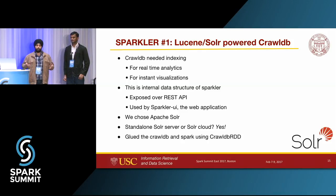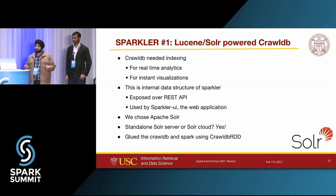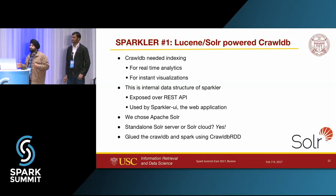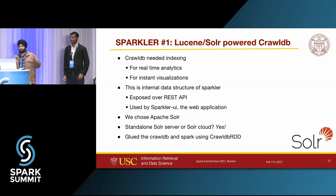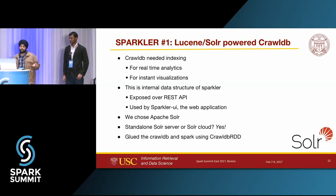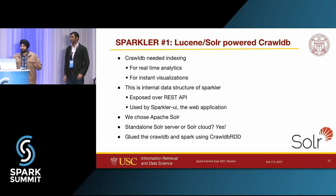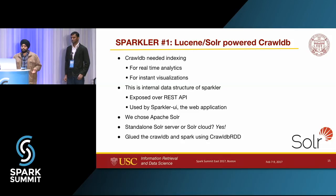Another challenge was that Spark RDDs are not meant or advised for asynchronous updates. So we created a customized RDD in Spark that acts as a proxy to our Solr crawl database — any updates to the RDD will reflect in the Solr index. We have two implementations: standalone and Solr Cloud. Depending on the use case, you can have that configured and run your crawls.